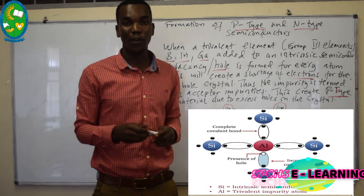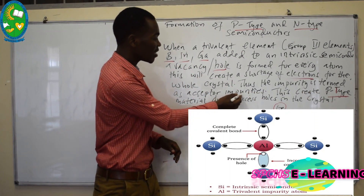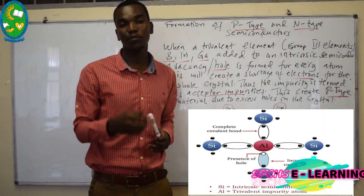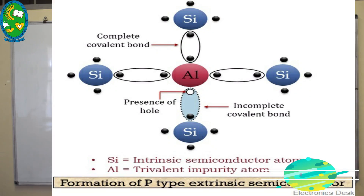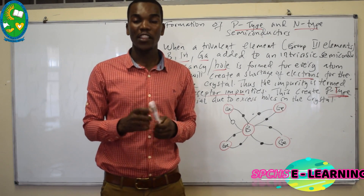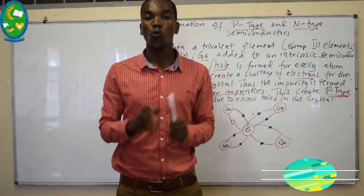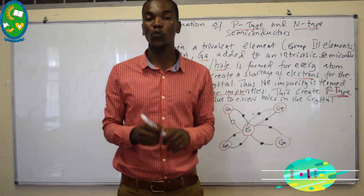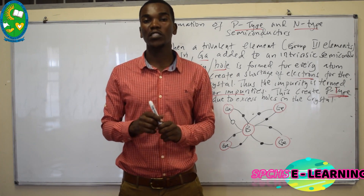This vacancy is what is known as a hole — an excess of positive charge in the material. These impurities act as acceptor impurities because they accept electrons from the semiconductor. Since they create an excess of positive charge, this type of material is known as P-type, whereas the material formed by pentavalent donor impurities — with excess free electrons — is known as N-type.